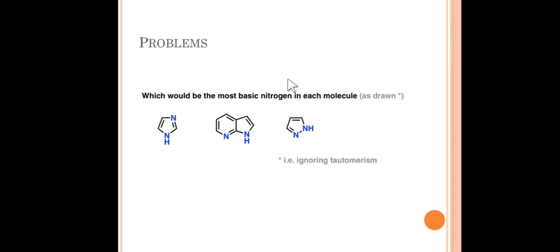Now I have a homework for you: please write down which would be the most basic nitrogen-containing compound from the following examples. Ignore tautomerism and arrange the three compounds in increasing order of basicity — from least to highest. You must provide reasons for each compound; don't just put greater-than signs between them. Provide an explanation for each and every compound. This is all for today's lecture — if you have any doubt, please feel free to ask. Thank you very much.